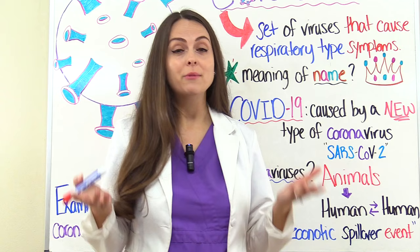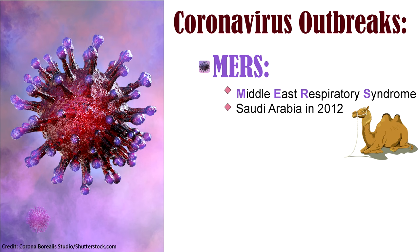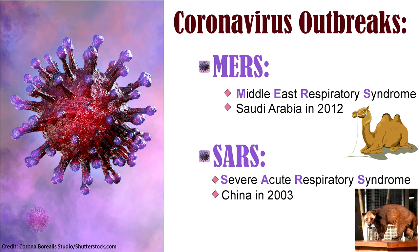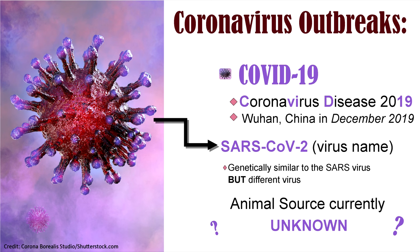For instance, we have seen MERS — Middle East Respiratory Syndrome — which first started in Saudi Arabia in 2012 and originated from camels. There's also been SARS — Severe Acute Respiratory Syndrome — which started in China in 2003 and originated from a civet cat, which looks more similar to a mongoose than what we see in the US with cats. And today we are experiencing a coronavirus outbreak called COVID-19, which started in Wuhan, China, first identified in 2019.